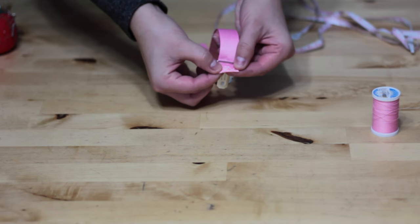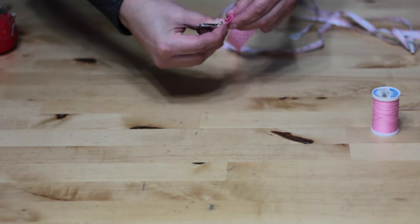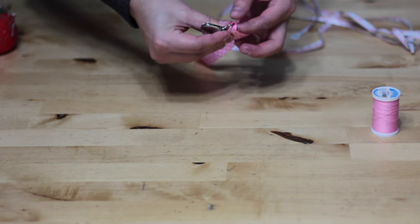So go ahead and fold over the end of the ribbon about a quarter inch and fold that end over the metal part of the mitten slash suspender clip.